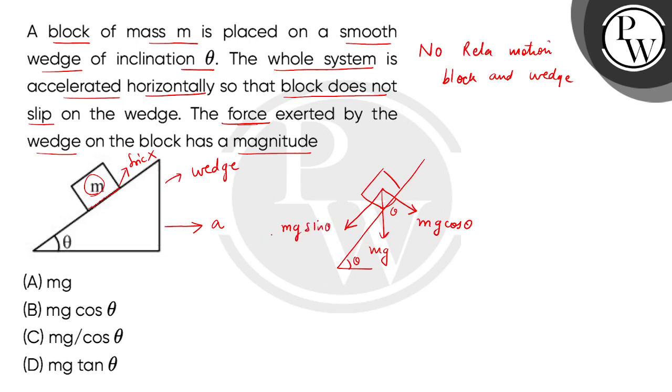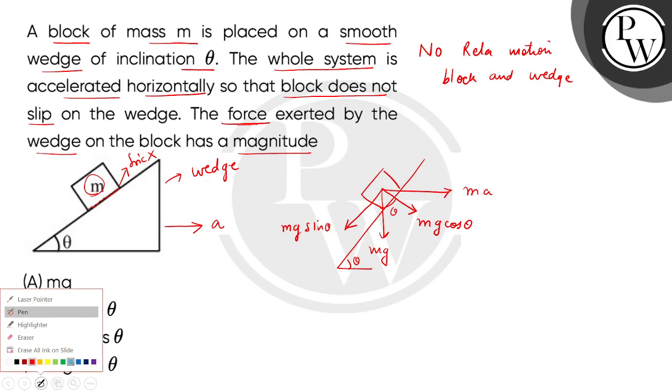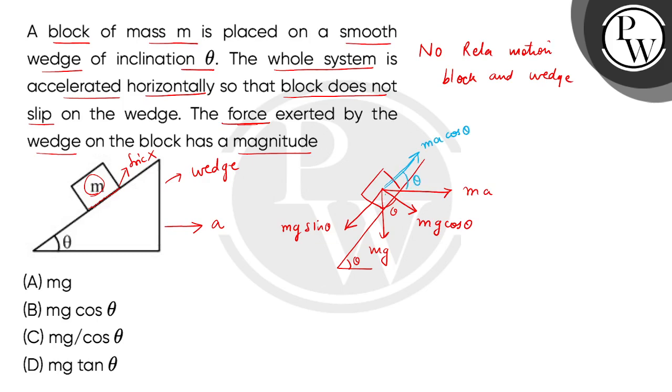If we consider the acceleration or driving force on the block, we also have two components. The component along the plane is ma cos theta because the theta angle is here, and the second component which is perpendicular to the plane is ma sin theta. These are the two components along the plane for this block.